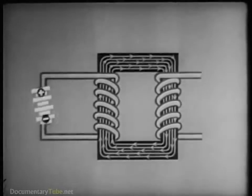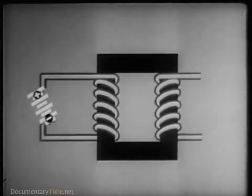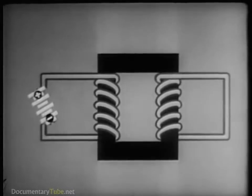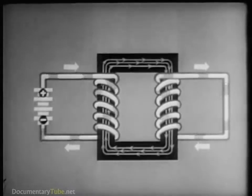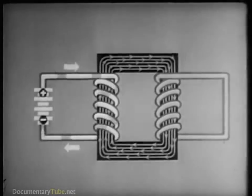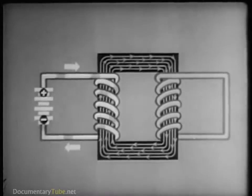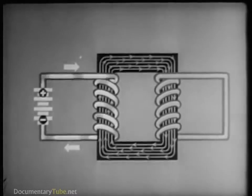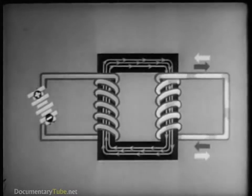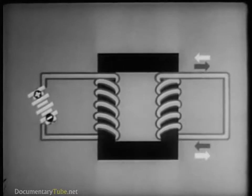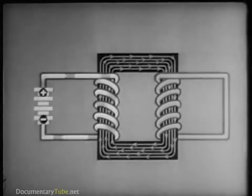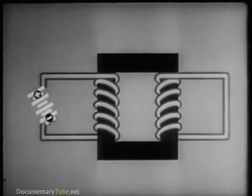Now let's see what happens when the other winding is part of a closed circuit. Current flows through it during the instant while the magnetic flux is building up. As soon as the magnetic flux reaches a steady value, however, this induced current disappears. When the current supply is cut off and the magnetic flux dies, current again flows for an instant in the second winding — this time in the opposite direction. This is the first important fact about a repeating coil: it blocks direct current except at the instances when the current is changing.